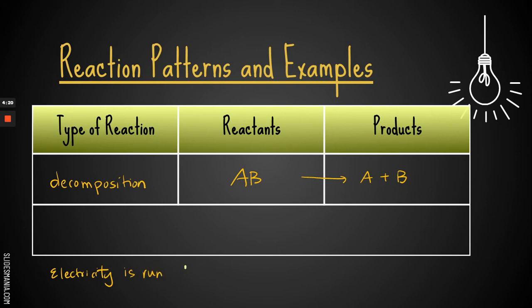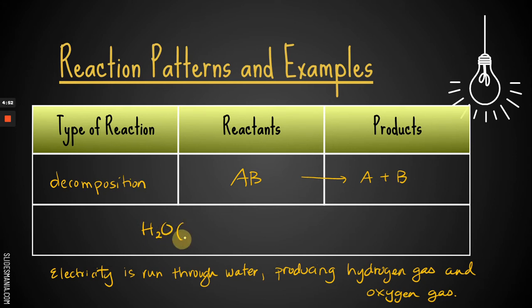So electricity is run through water, producing hydrogen gas and oxygen gas. So electricity is run through water. Water is my reactant, so here we go. It's H2O, it's liquid. And then it says producing, so I know that the arrow is next. So electricity is not a reactant. It's not something that I can write a formula for. I could put it up here if I wanted to, but you don't have to. But it produces hydrogen gas, which is H2, and oxygen gas, which is O2. And again, it's not balanced. But what we have is this pattern of one reactant being broken down into several products.